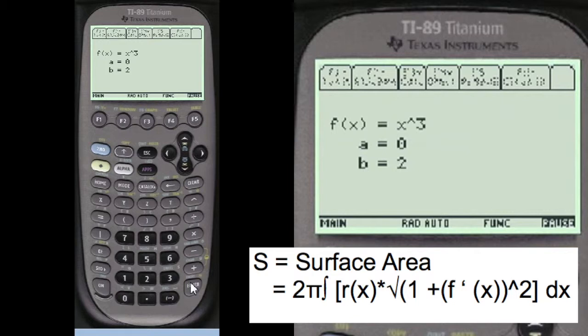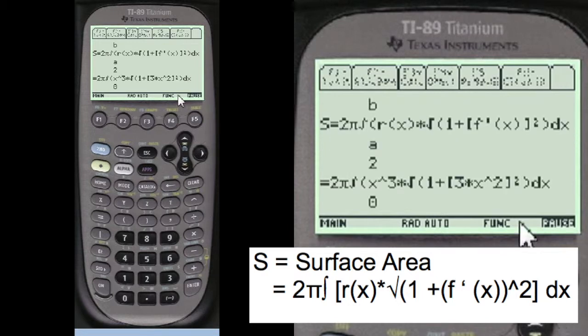I'll show you what you've entered so you can change it if you want. Say it's okay. The first derivative is 3x squared. That goes in the formula here. That's part of the formula.